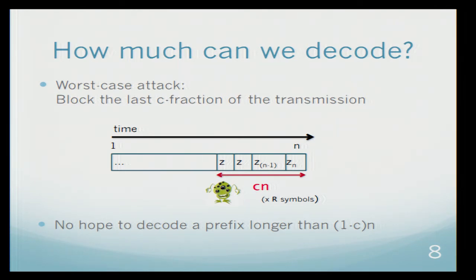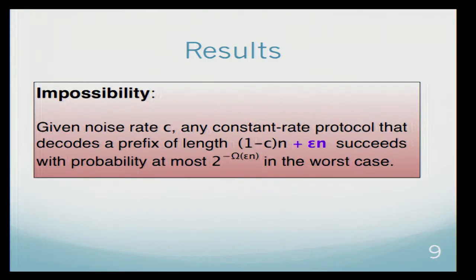From this point on, instead of saying a prefix whose length is 1 minus cn, I will just say to decode 1 minus c fraction of the stream. So there is no hope to decode more than 1 minus c fraction of the stream. This is actually our first result, which is an impossibility result. For any rate noise c, there is no hope to get a constant rate protocol that will recover more than 1 minus c fraction of the stream.